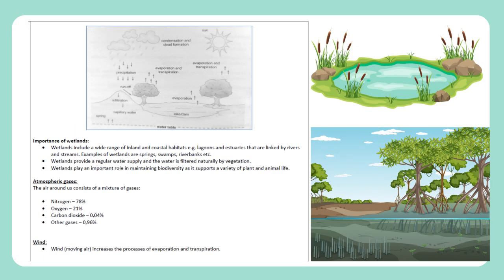Importance of wetlands: Wetlands include a wide range of inland and coastal habitats, e.g. lagoons and estuaries linked by rivers and streams. Examples include springs, swamps, and riverbanks. Wetlands provide a regular water supply and the water is filtered naturally by vegetation. Wetlands play an important role in maintaining biodiversity as they support a variety of plant and animal life. Atmospheric gases: The air consists of a mixture of gases — nitrogen 78%, oxygen 21%, carbon dioxide 0.04%, and other gases 0.96%. Wind: Moving air increases the processes of evaporation and transpiration.